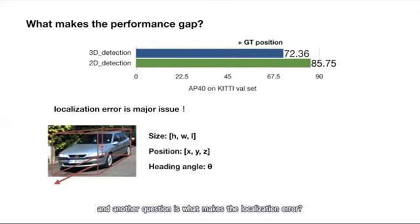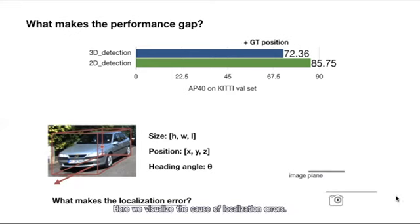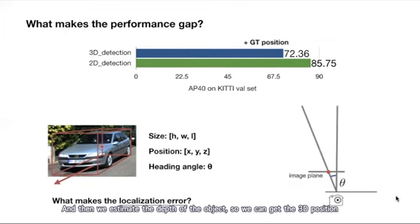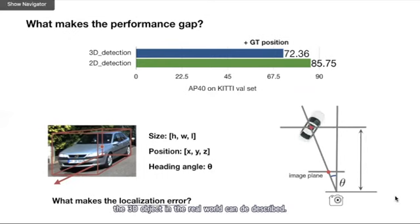Another question is what makes these localization errors? Here we visualize the cause of the localization errors. To recover the object's position in the 3D space, we need to estimate its position in the image plane. With the help of the camera parameters, we can determine the direction of the objects. Then we estimate the depth of the objects so we can get the 3D positions. Coupled with the estimated size and the heading angles, the 3D objects in the real world can be described.